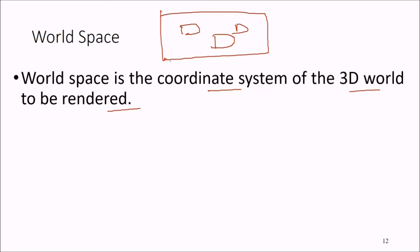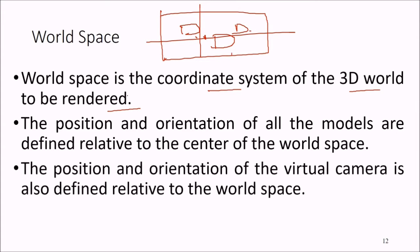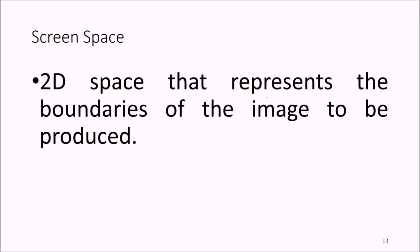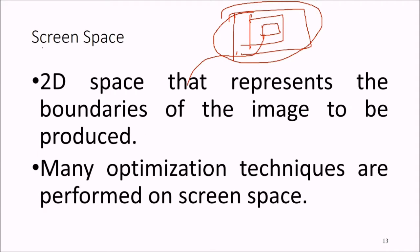World space is the coordinate system of the 3D world to be rendered. The position and orientation of all the models are defined relative to the center of this world space. The position and orientation of the virtual camera is also defined relative to the world space. Then comes screen space — the 2D space that represents the boundaries of the image to be produced, on which many optimization techniques are performed.